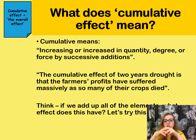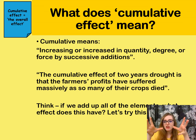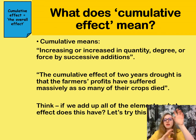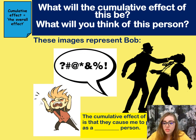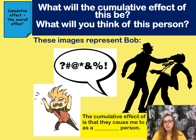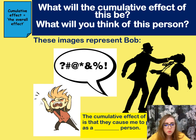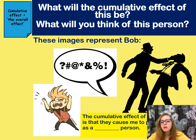Something a lot of students tend to do is look at the overall effect of just one quote. But with cumulative effect, we have to look at more than one quote and stitch them together — like jigsaw pieces from different parts of an extract. To illustrate, here are some images representing someone called Bob. Pause the video and write down what you think about Bob. What's the cumulative effect of these images? What do we think about this person?